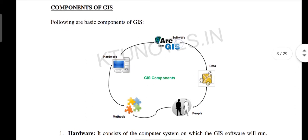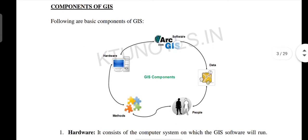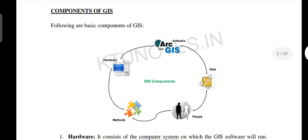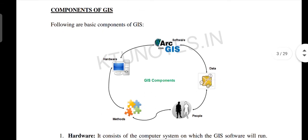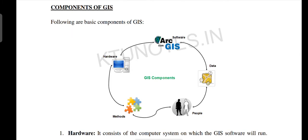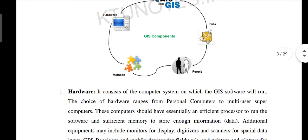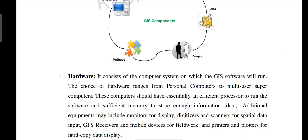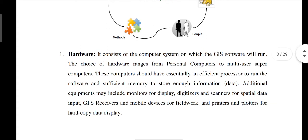There is a database with different types of data. We have interlinked and capable GIS. There are components: a hardware system and GIS software. We use different methods to analyze data. The hardware is the computer system on which the GIS software will run.